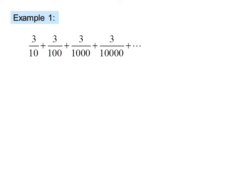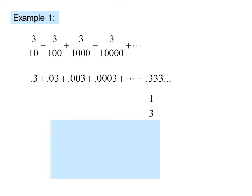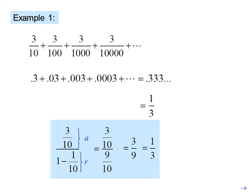Example: three over ten plus three over one hundred plus three over one thousand plus three over ten thousand, et cetera. It could also be written as 0.3 plus 0.03 plus 0.003 plus 0.0003 and so forth, which equals 0.333 repeating, which we recognize as one-third. We can confirm this by taking the first term, three-tenths, over one minus r, where r is one-tenth. So three-tenths is a and one-tenth is r. We get three-tenths over nine-tenths, or three-ninths, which is one-third.